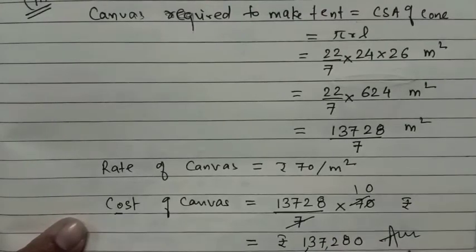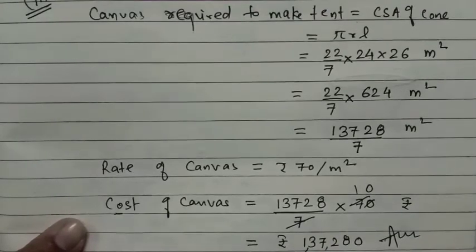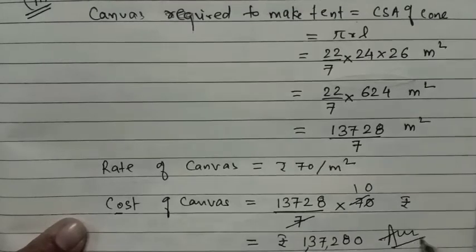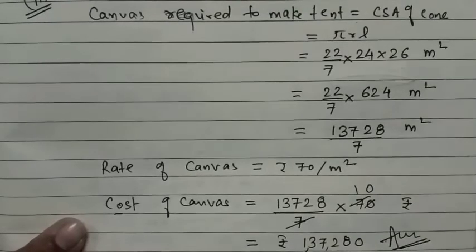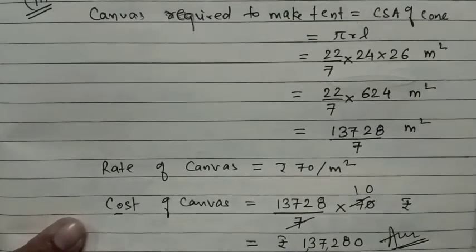So that is the total expenditure to build that tent — ₹1,37,280. Hopefully you understood. Thank you very much for watching.